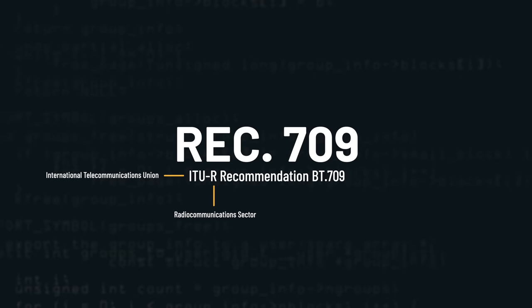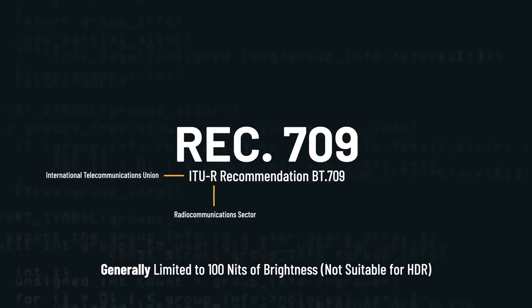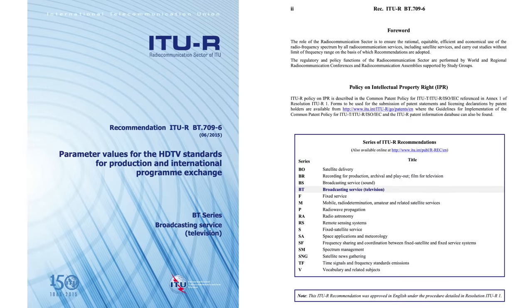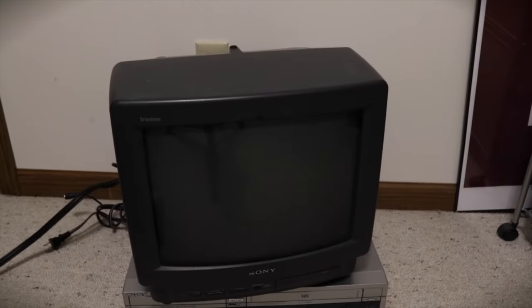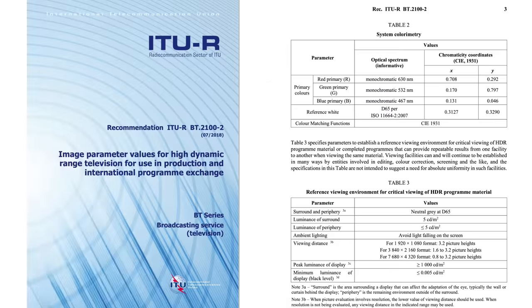This color space is part of Rec.709. Rec.709 is a series of recommendations assembled by the International Telecommunications Union. It dates back to the 90s, and back then people were not prioritizing higher brightness video. This explains what happened to me at the beginning of this episode — I was filming with much more brightness information that couldn't be displayed in Rec.709, causing my highlights to clip and appear as solid white. But the world is moving forward, and Rec.2020 and 2100 have specifications for high dynamic range.